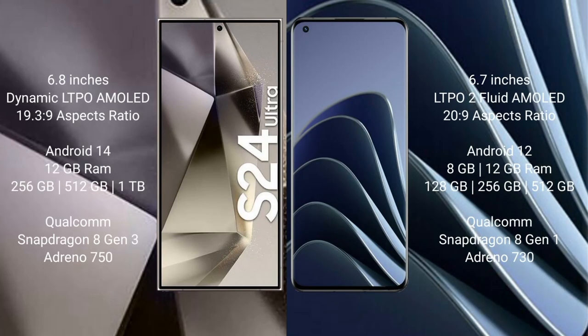Samsung Galaxy S24 Ultra comes with a 6.8-inch dynamic LTPO AMOLED display and aspect ratio 19.3:9. OnePlus 10 Pro comes with a 6.7-inch LTPO 2 Fluid AMOLED display and aspect ratio 20:9.